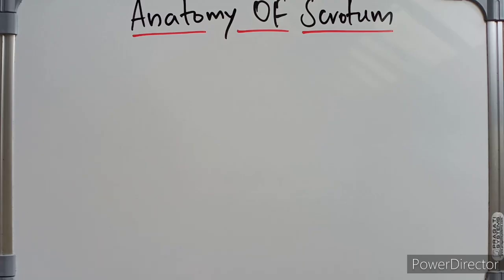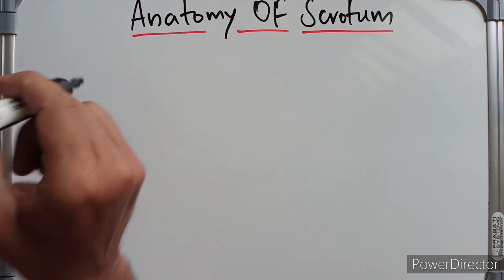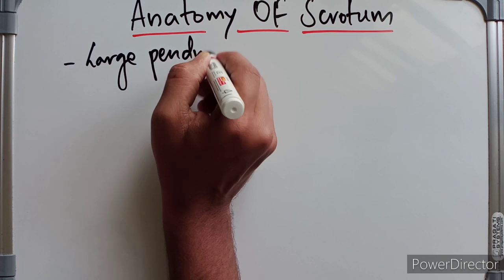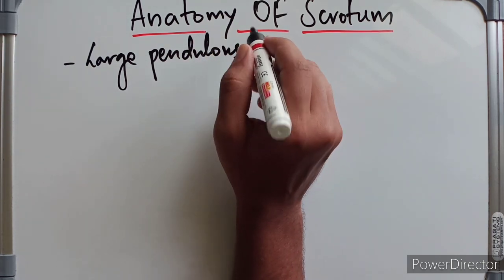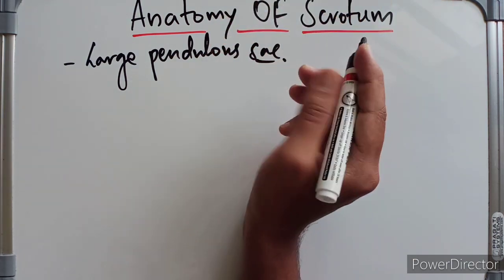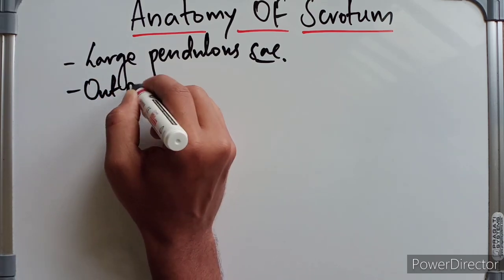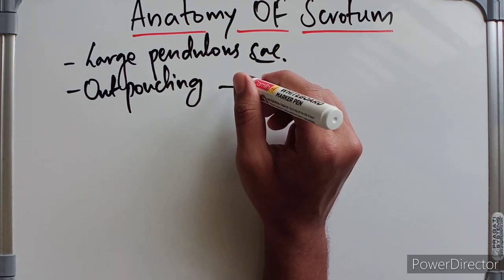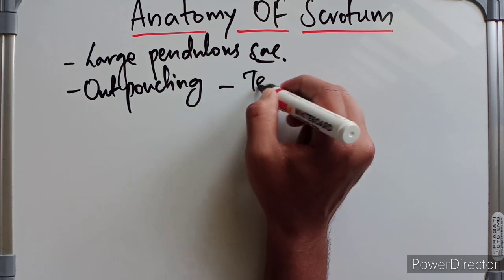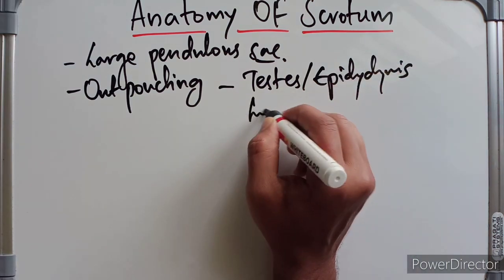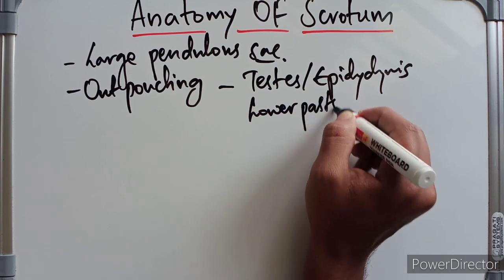Welcome to this video on the anatomy of the scrotum. The scrotum is a large pendular sac located below and behind the penis. It is considered an outpouching of the lower part of the anterior abdominal wall, and it contains the testis, epididymis, and the lower parts of the spermatic cord.